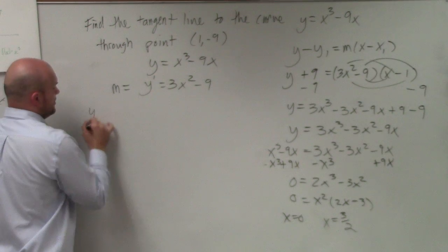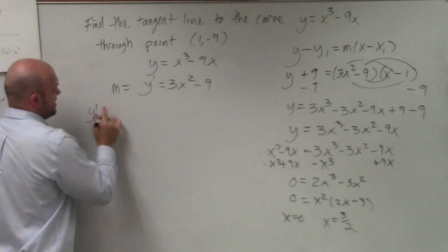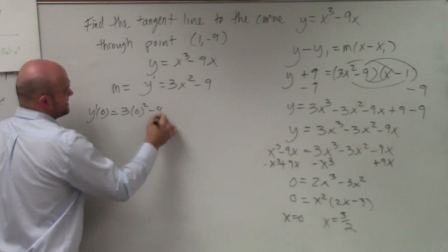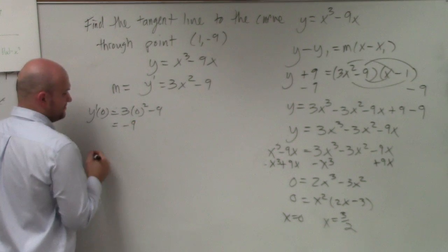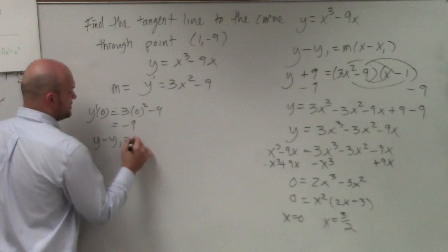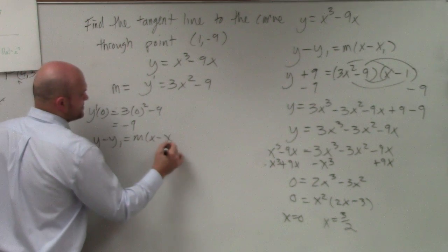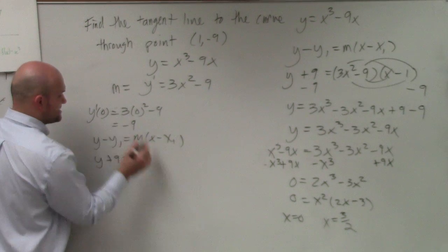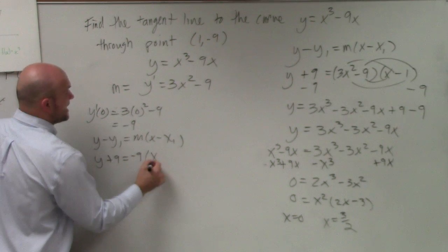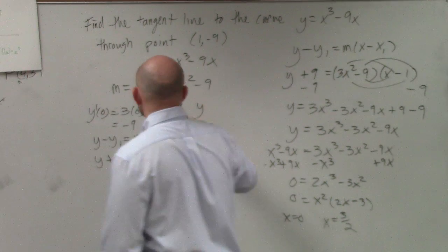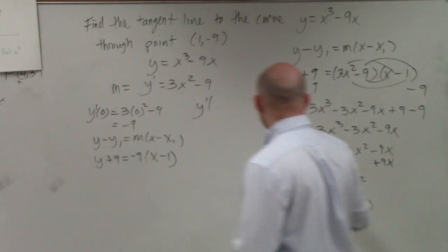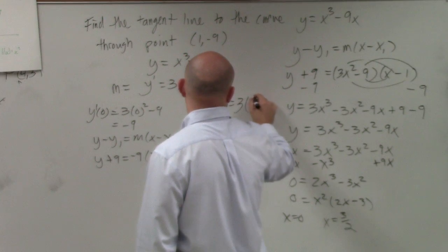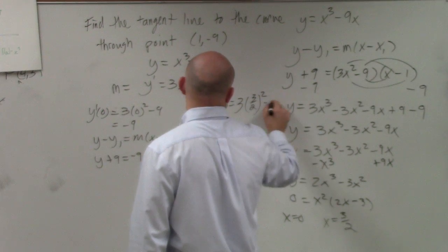For my slope, for my first point, I plug in 0. y'(0) gives me my first slope, which is 3(0)² - 9, which equals -9. So therefore, y - y₁ = m(x - x₁). The points are the same. y + 9 equals, but my slope is -9 times (x - 1). Then to find my other slope, I need y'(3/2), which equals 3(3/2)² - 9.